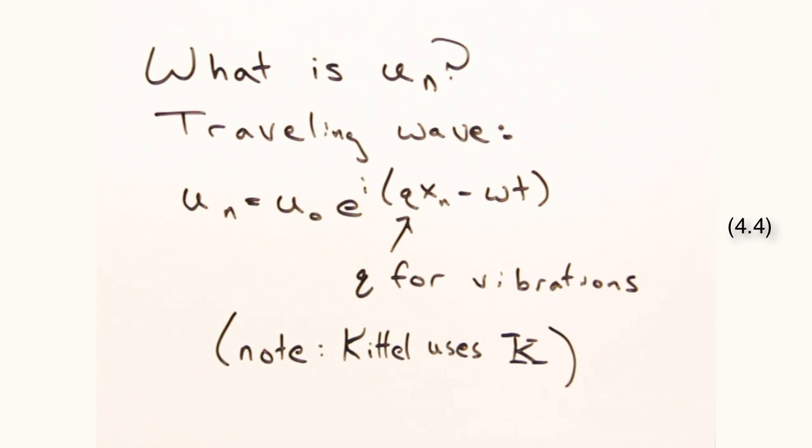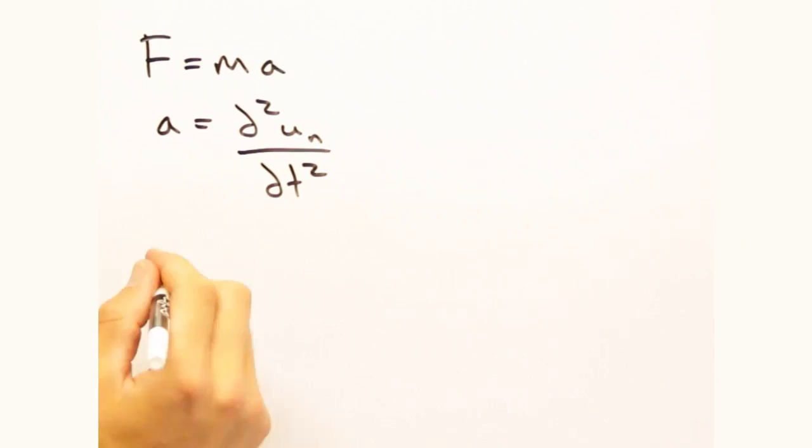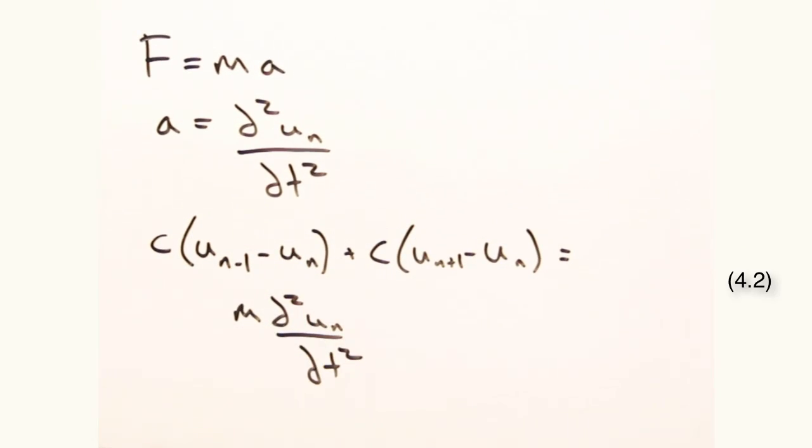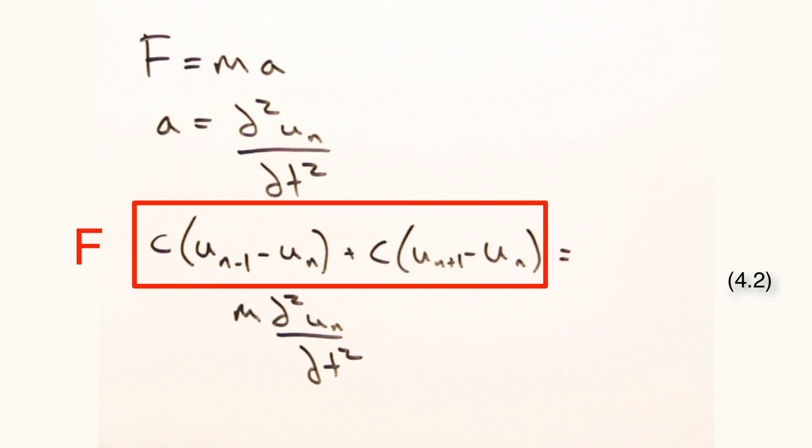Good, not another k variable. And we have x sub n, our original atom position before vibrations, along with a time dependent portion. Now that we have this expression for u, we can do some plug and chug through Newton's second law and eventually get to this equation.